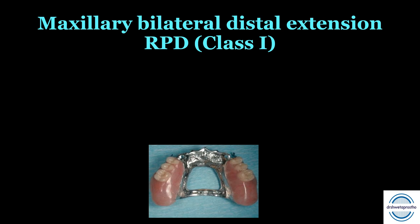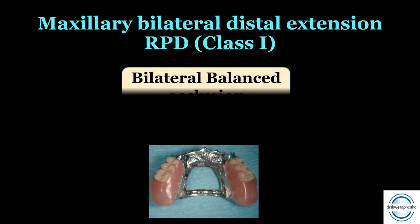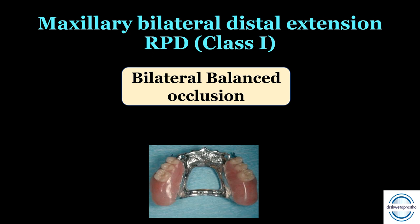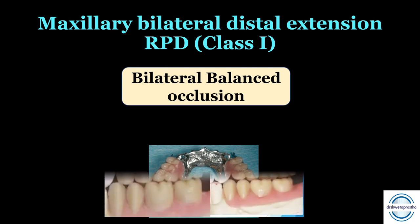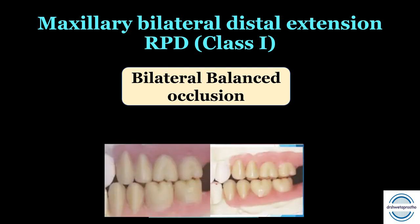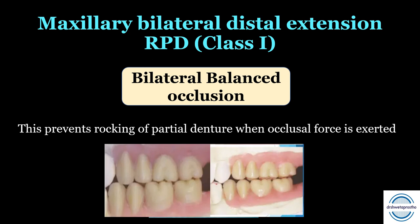The next important condition is the maxillary bilateral distal extension RPD — also a Class 1 case. It is treated similarly to the maxillary complete denture case and also comes as a multiple choice question. In this case we give bilateral balanced occlusion, meaning both working side contacts and balancing contacts. The reason is the same: this will prevent the rocking of the partial denture when occlusal forces are exerted, because in the maxilla the teeth are placed labially, so we need contacts on both sides.